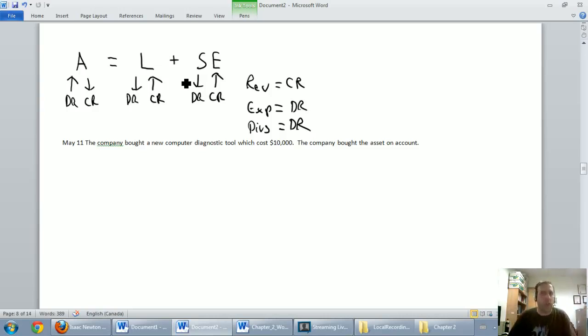So the question, is cash involved? Well, no. If I bought something and I didn't pay for it, then there's no cash. The company bought a new computer diagnostic tool. That's an asset. That's something we own and control. It's an asset going up. We're going to debit that asset. Let's debit this computer tool and we're going to debit it for the amount we paid—well, the amount we didn't pay, but the amount it's worth—$10,000.